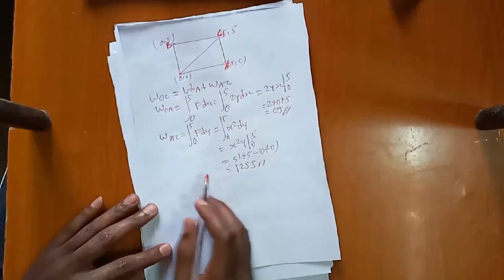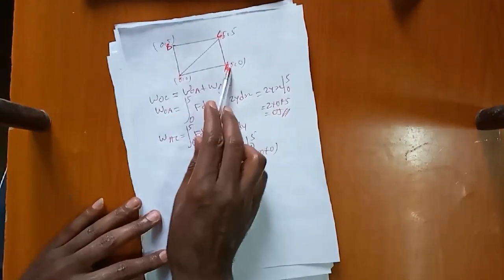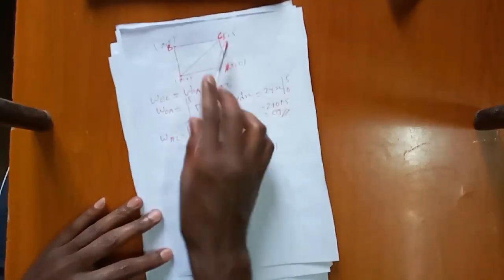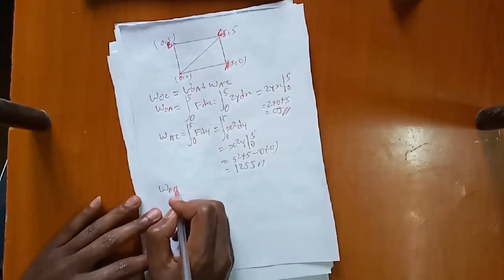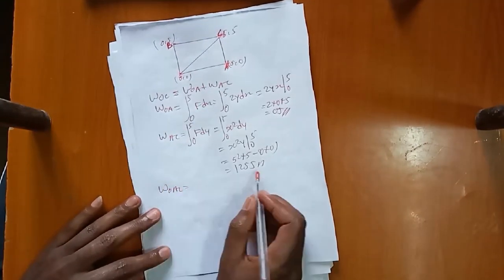Therefore the total work along path OAC is equal to work along OA plus work along AC, which equals 0 plus 125 joules, giving W along OAC equals 125 joules.